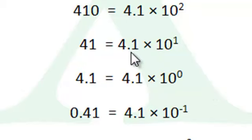Now if we multiply 4.1 times 10, we get 41. If we multiply 4.1 times a tenth, which is what 10 to the minus 1 represents, multiplying by a tenth is the same as dividing by 10. 4.1 divided by 10.